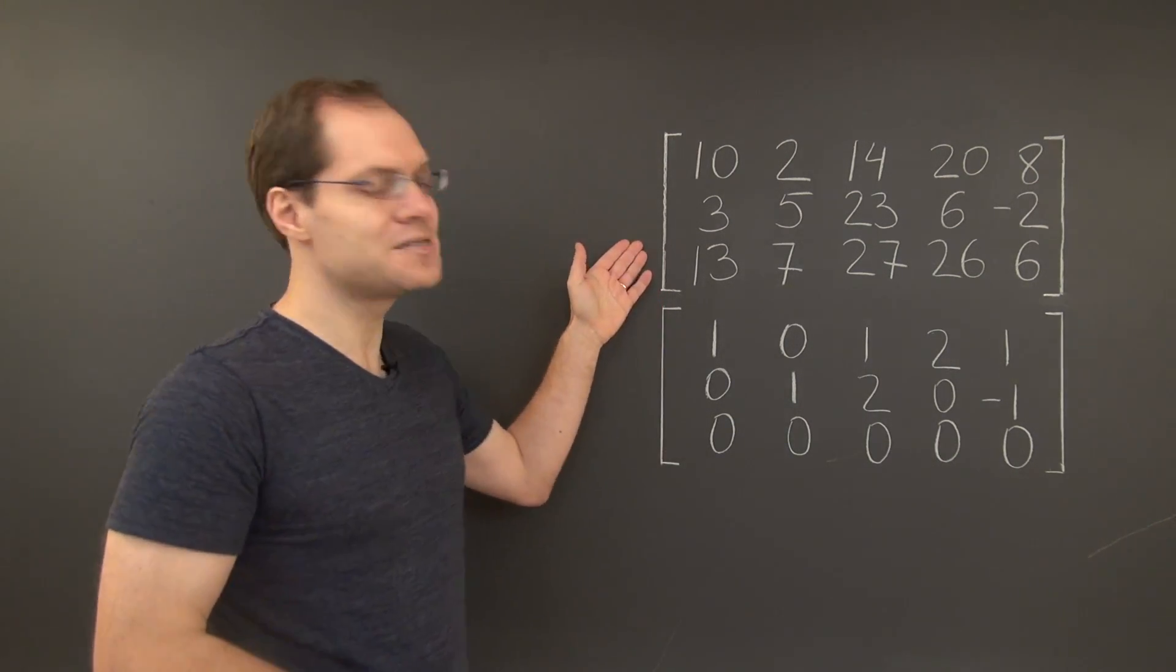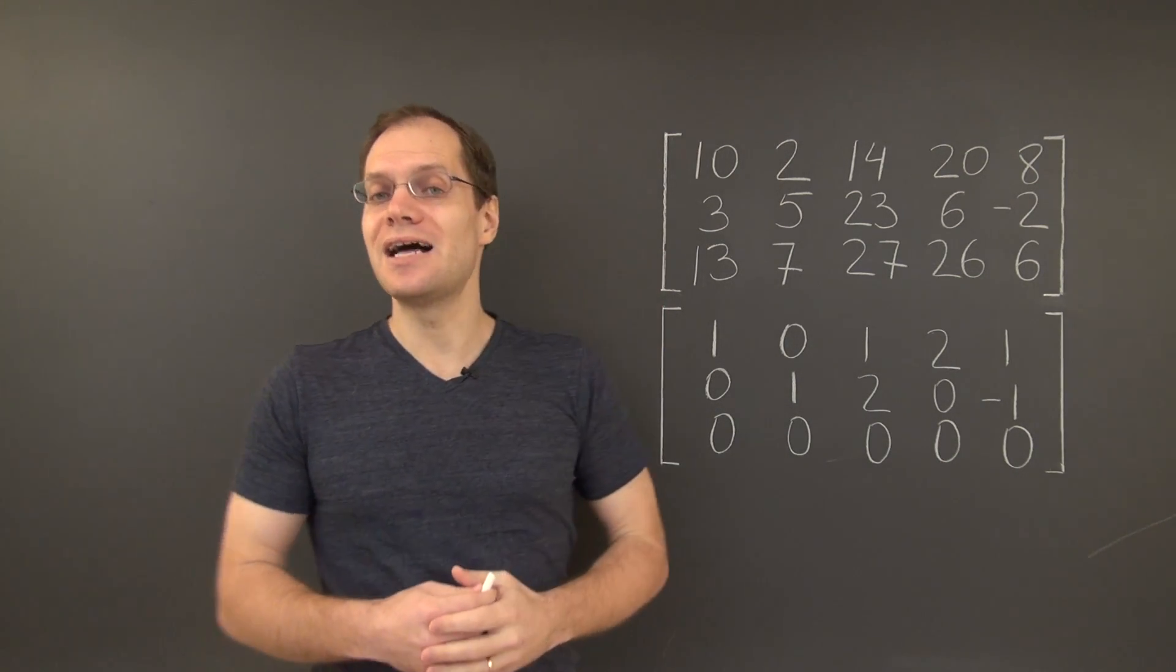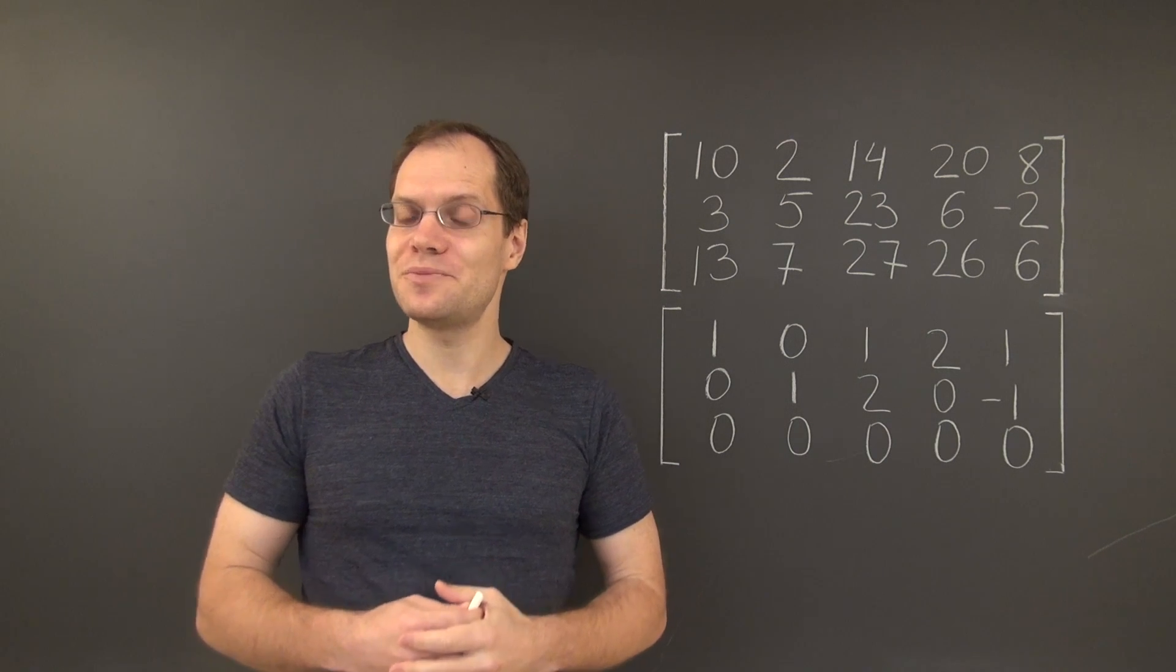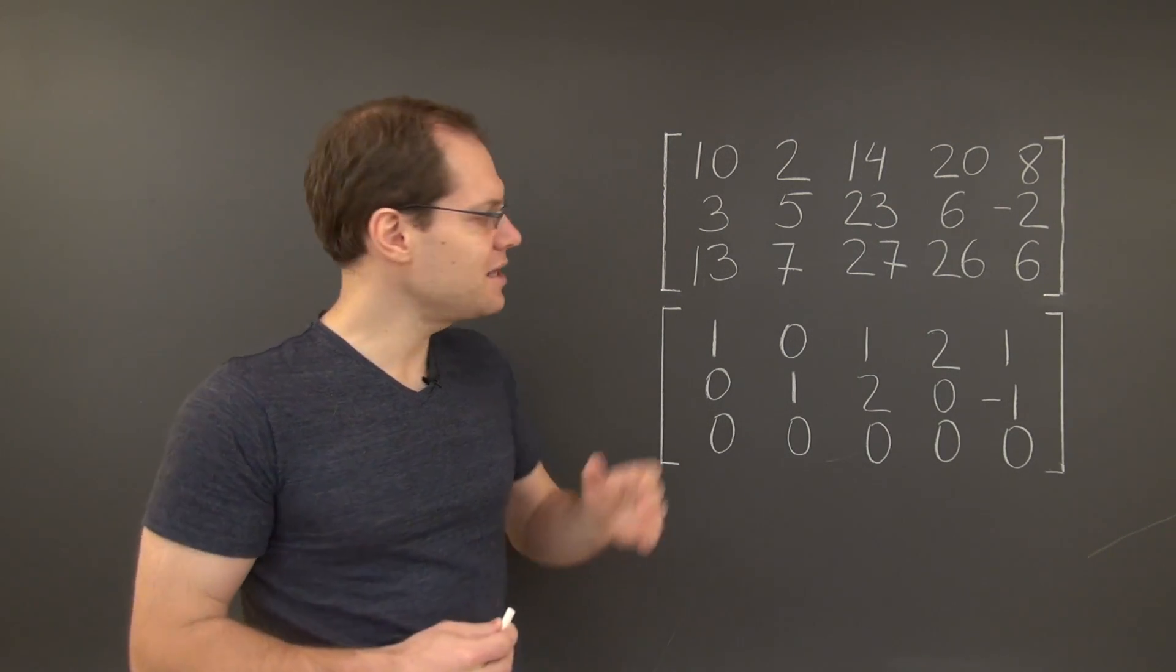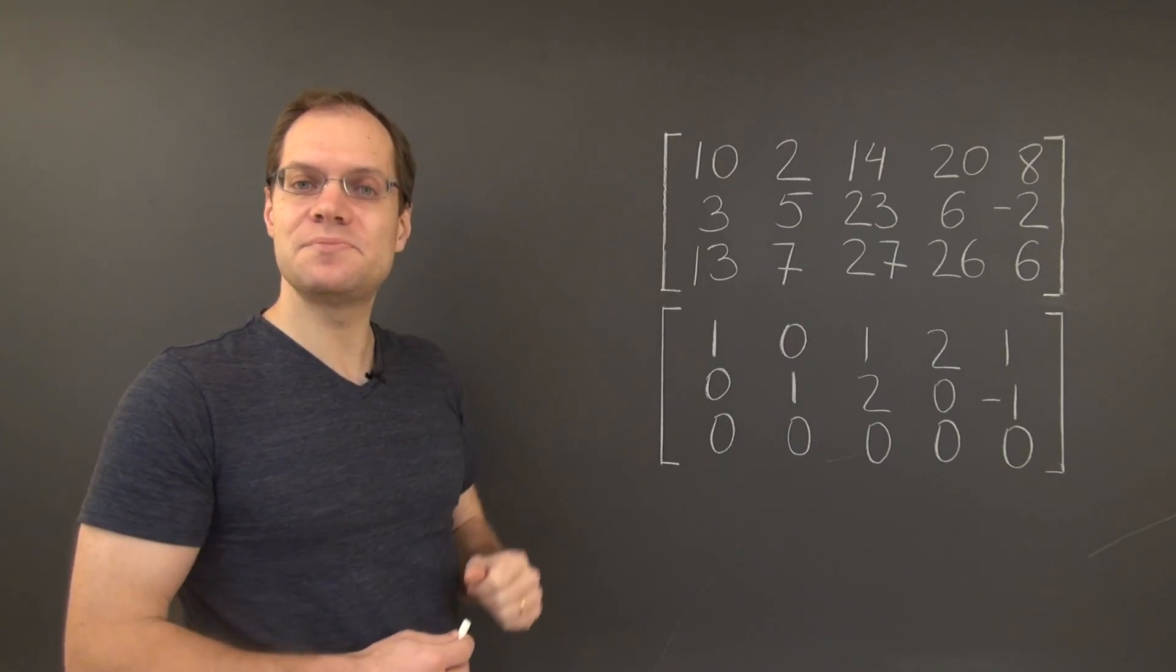For example, consider this matrix. Its column space, as all of you should be able to justify by now, is A, B, A plus B.